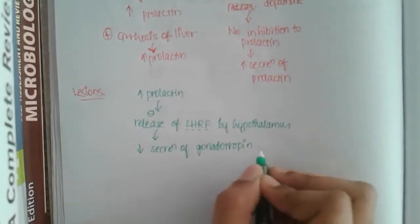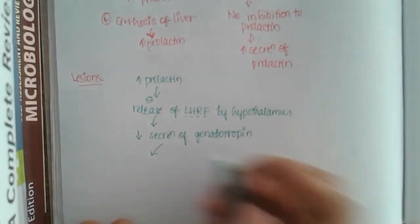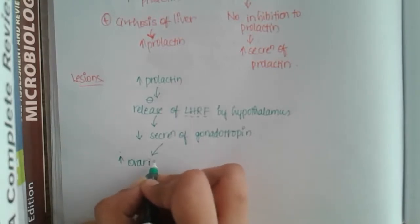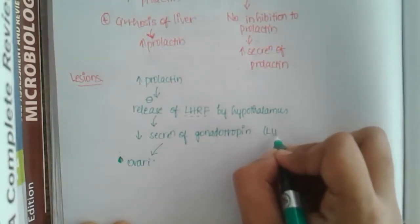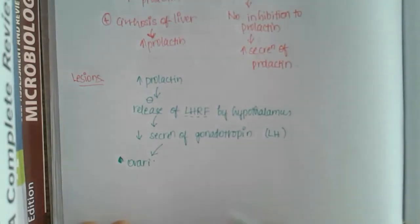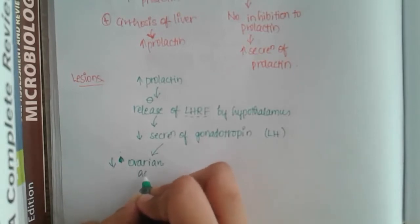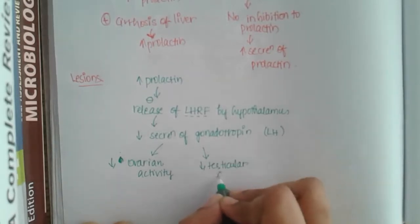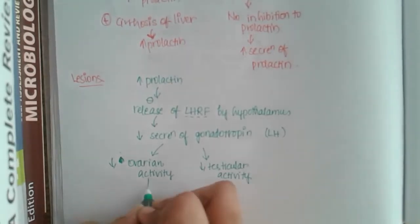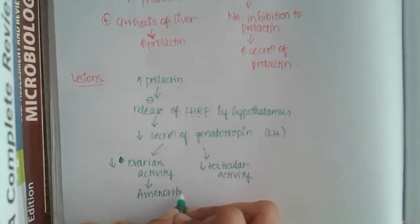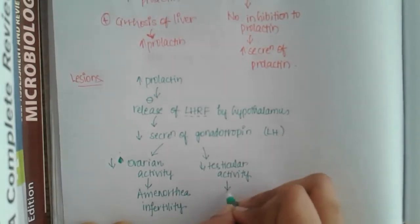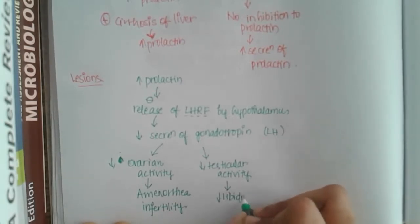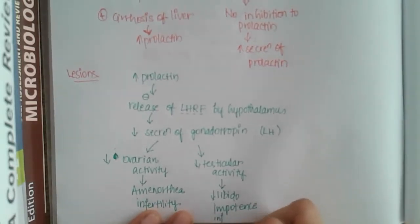Decreased gonadotropins — mainly LH and FSH — leads to decreased ovarian activity and decreased testicular activity. Decreased ovarian activity leads to amenorrhea and infertility. Decreased testicular activity leads to decreased libido, decreased sperm count, and ultimately infertility.